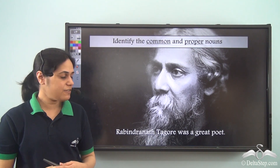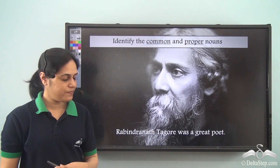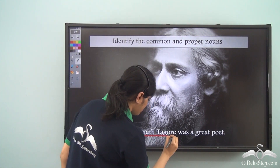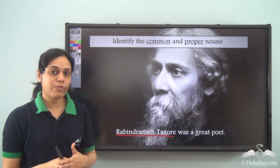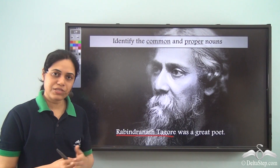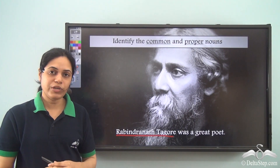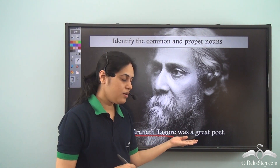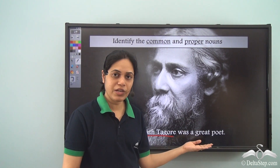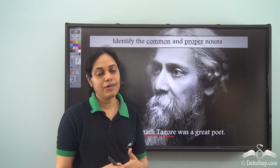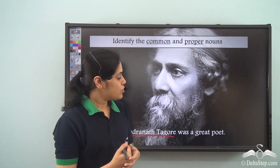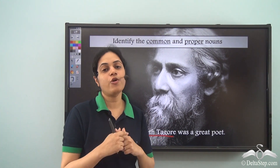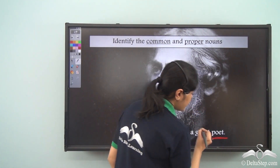So now let us identify the common and proper nouns in this sentence: 'Rabindranath Tagore was a great poet.' If I look at the words Rabindranath Tagore, it is the name of a specific person, so this is a proper noun. Was is not naming anything. A is not the name of anything. Great is not the name of anything. Poet is the name given to certain people who write poetry, but it is not specifying any person — it is the general name for all people who write poetry. So poet is a common noun.